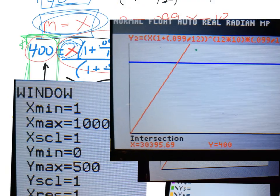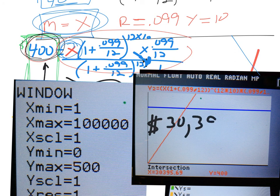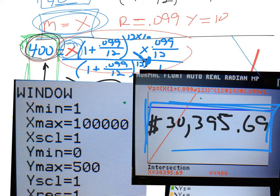And here, my point of intersection turned out to be this $30,395.69, comma, Y is equal to 400. So here, how expensive of a motorcycle can this person afford to have $400 a month payments? Here, it looks like the motorcycle you can afford is $30,395.69. So that would be the price of the motorcycle.